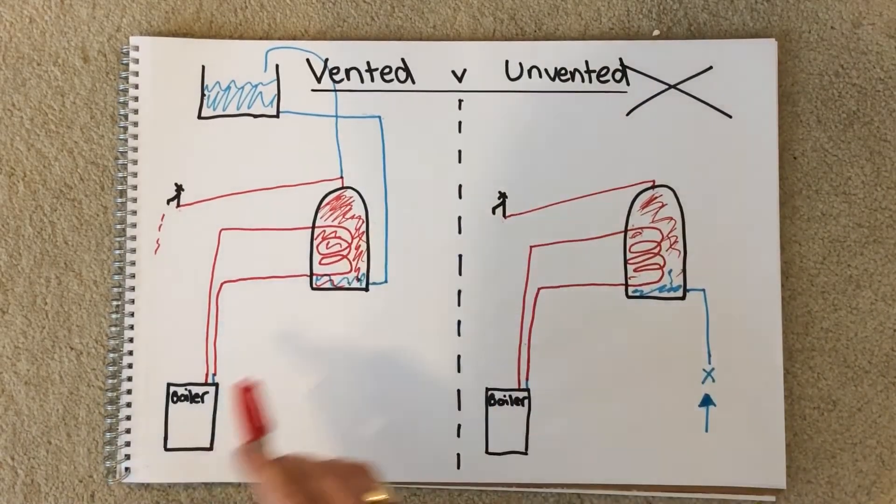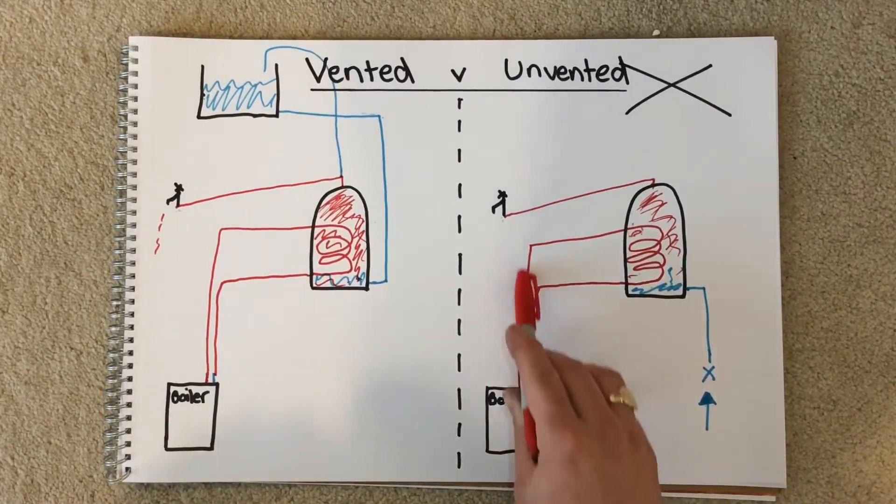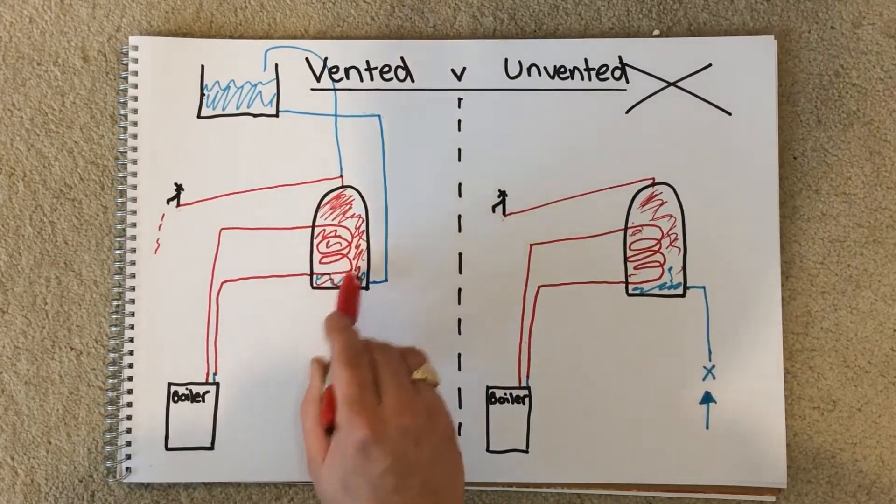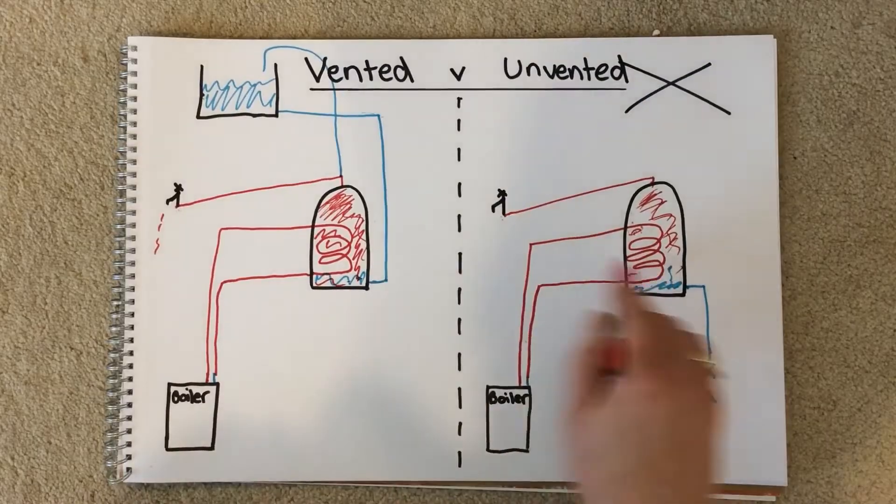So they're both heated in exactly the same way via a coil from the boiler. It comes from the boiler, through the coil, and back down to the boiler. That's how they're both heated.